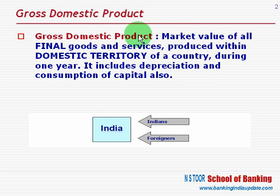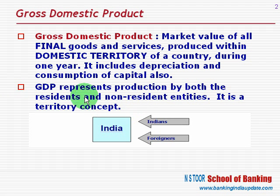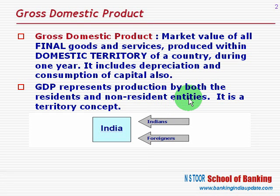GDP also includes the amount of depreciation, or we can also call it consumption of capital. GDP is represented by production both by the resident entities and non-resident entities, so it is a territory concept.